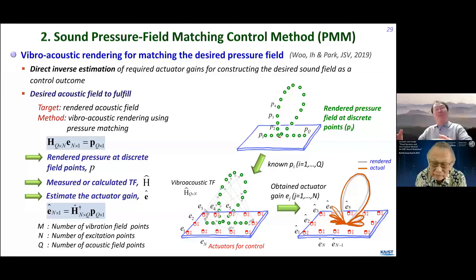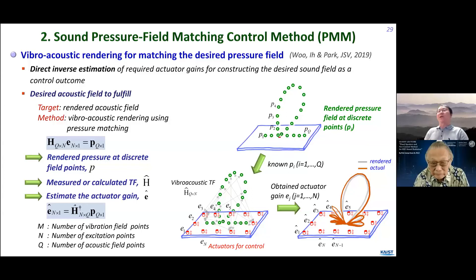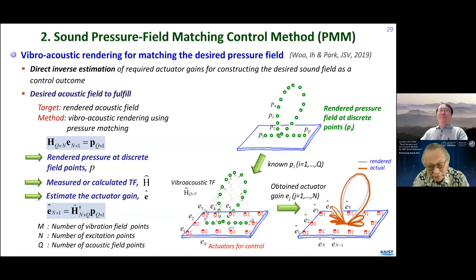Is the inverse solution unique? No, it's actually not unique, but we obtain the best solution in a least-squares sense. We have to be careful about the inverse process because it involves singularity due to noise, so numerical techniques like regularization are needed. It is also related to optimization — optimization of the bias error and the random error.